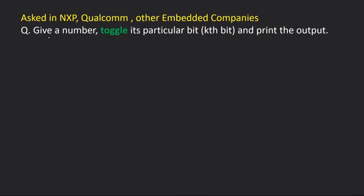In this question, we are asked that if we are given a number, we have to toggle its particular kth bit and then print the output.